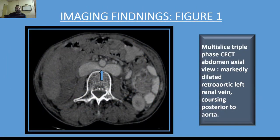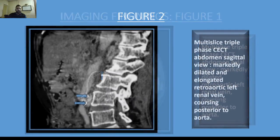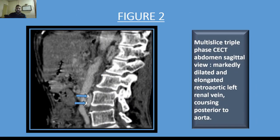On multislice triple-phase contrast-enhanced CT abdomen, the axial view shows a markedly dilated retroaortic left renal vein coursing posterior to the aorta. On the sagittal view, we can also appreciate the markedly dilated and elongated retroaortic left renal vein coursing posterior to the aorta.